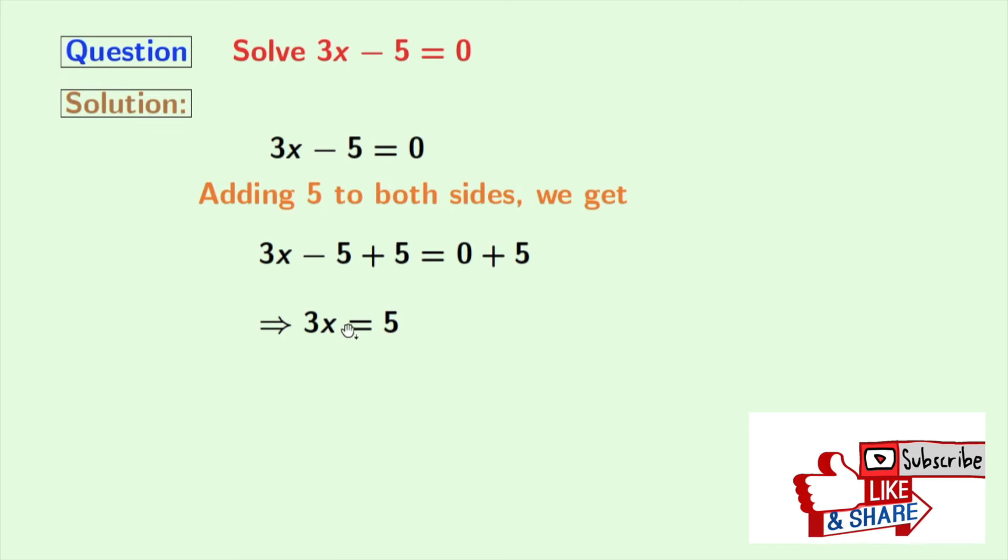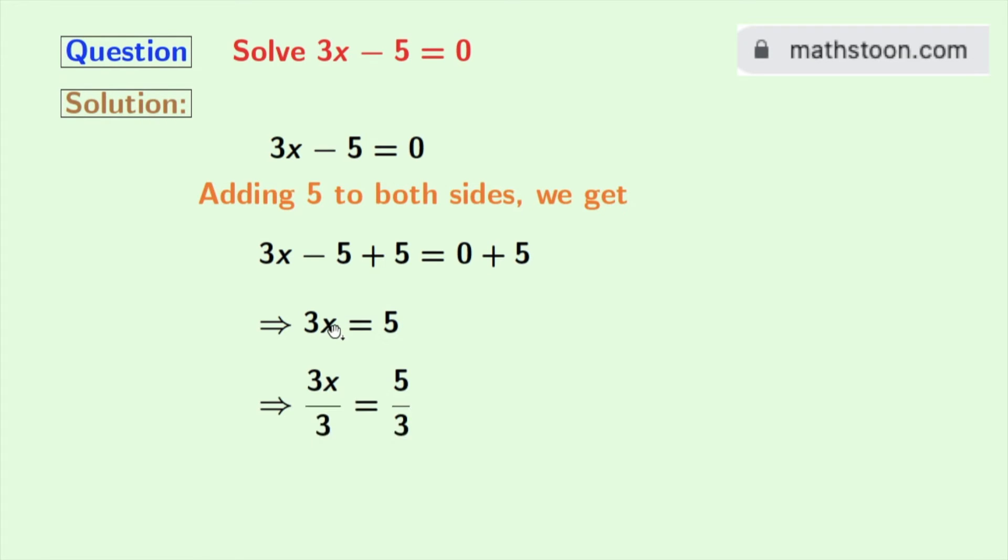Now to get the value of x, we will divide both sides by 3 as 3 is the coefficient of x. Doing that we get 3x by 3 is equal to 5 by 3.